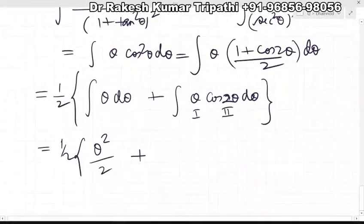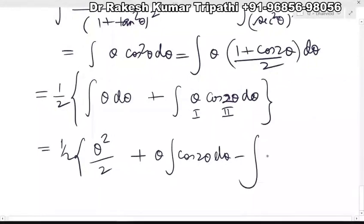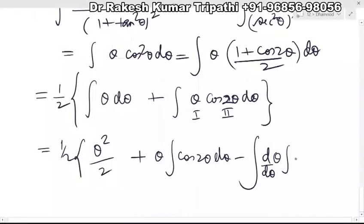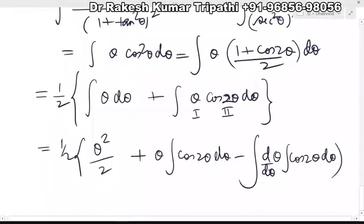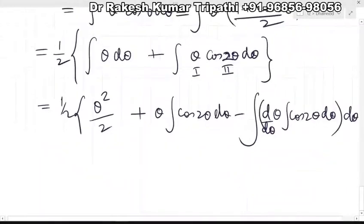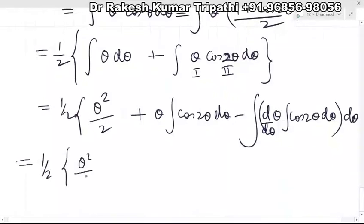For integration by parts on θ cos 2θ: take θ as the first function and cos 2θ as the second function. Apply the formula: first function times integral of second function, minus integral of (differential of first function times integral of second function). The integral of cos 2θ is sin 2θ.